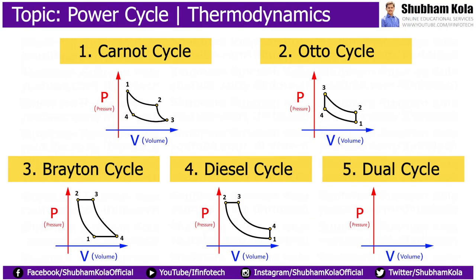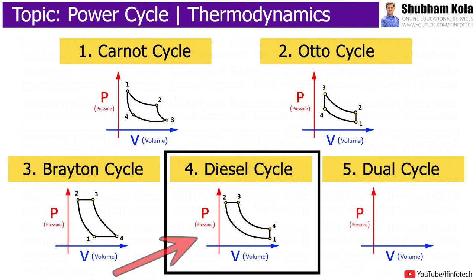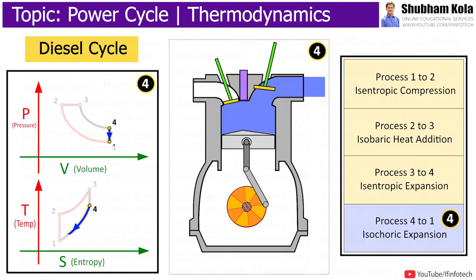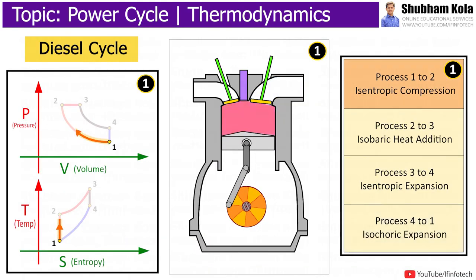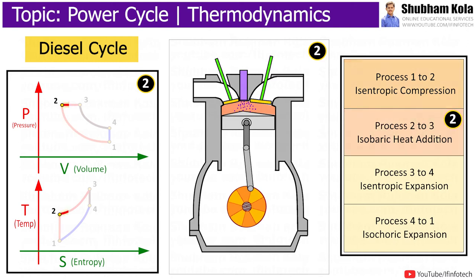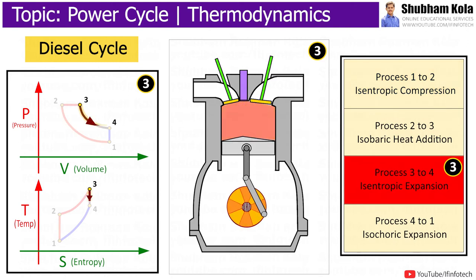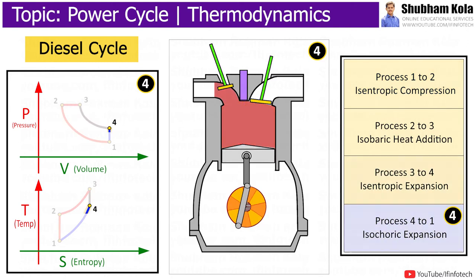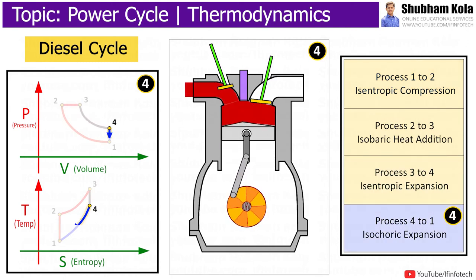In this video, we are going to learn about the Diesel cycle, which is an air standard cycle used to design compression ignition engines. This cycle is also called the constant pressure cycle.